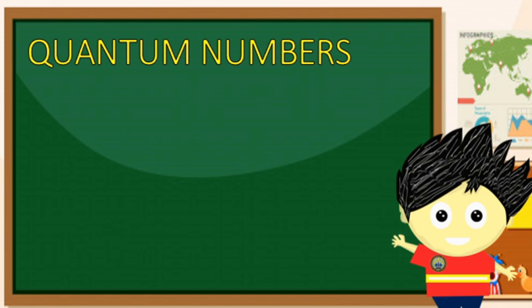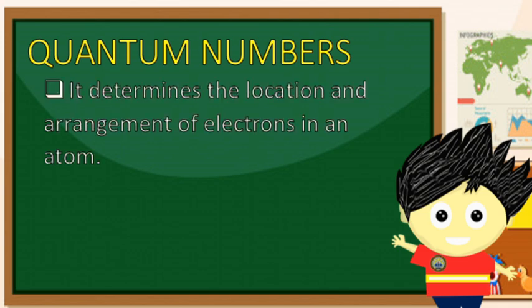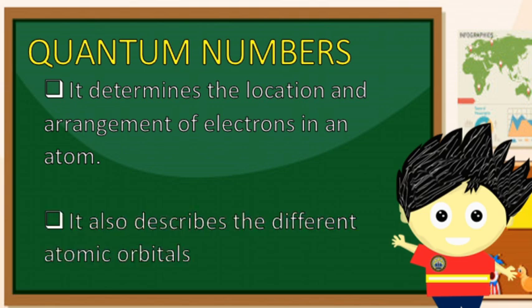Quantum numbers. It determines the location and arrangement of electrons in an atom. Further, it also describes the different atomic orbitals. Ang quantum numbers ang tumutulong upang malaman natin kung ano ang distribution, paano ang arrangement, at kung saang orbital natin makikita ang mga electrons.